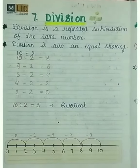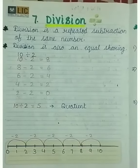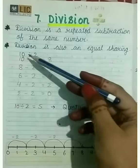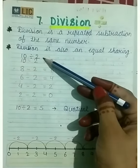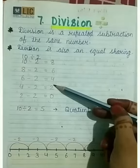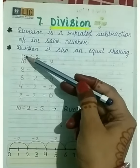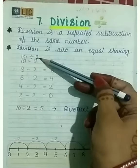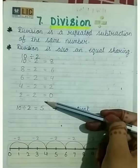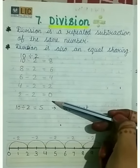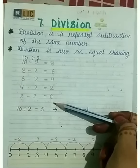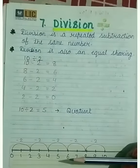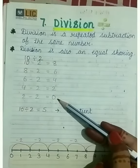Here we will see how it is a repeated subtraction. For example, 10 divided by 2. Here we will subtract 2 from 10 again and again till it becomes 0 and see how many times we will have to subtract 2 from 10 to make it 0.